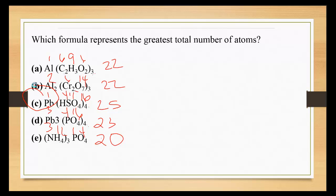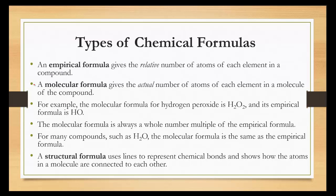An empirical formula gives the relative number of atoms in each element in a compound, while the molecular formula gives the actual number of atoms in each element of the molecule. The difference here is the empirical form is the most reduced form, while the molecular formula is what's actually there.